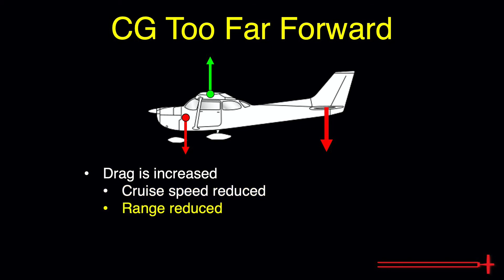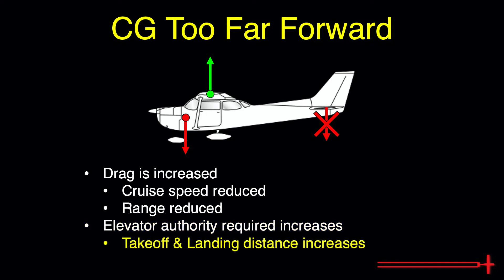Another risk as the CG moves too far forward is that the aircraft requires more elevator authority because of the apparently heavier nose portion. In severe cases, the aircraft will lack sufficient elevator authority to rotate during takeoff or to flare during landing. In this case, takeoff and landing distances will increase. Lastly, because we must generate more lift to keep the aircraft afloat, our stall speed also inches higher.